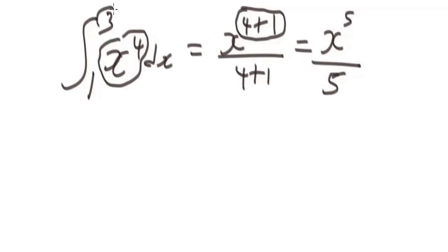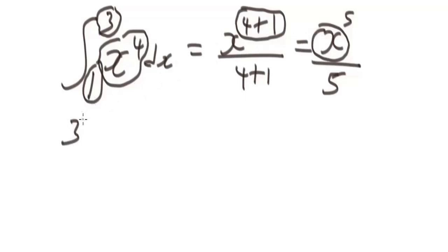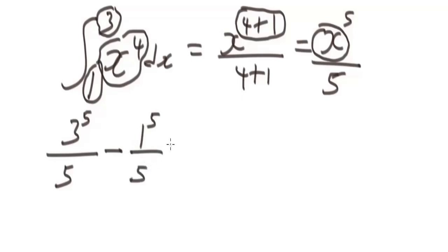Once you have done this, you then plug in the upper limit and lower limits into this value of x respectively. That means you have to subtract the lower limit from the upper limit. So we begin: when you plug in 3, you get 3 to the power of five over five, minus plugging one into x, you get 1 to the power of five over five.